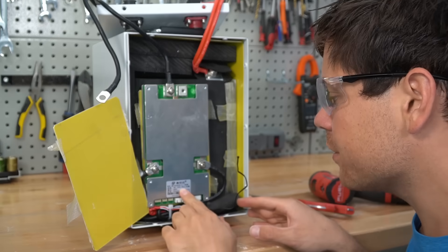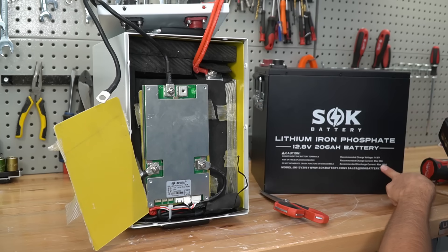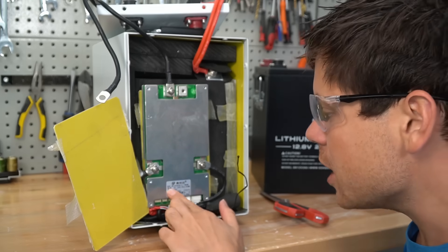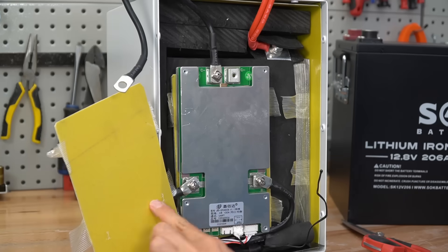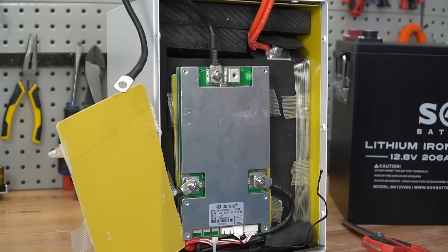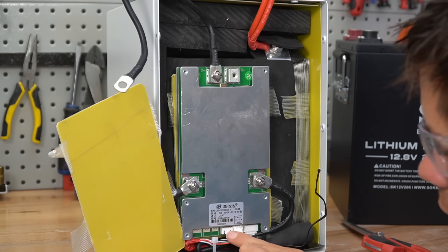This is a 150-amp BMS. And the SOK can only do 100 amps. And this is a JBD, so this is the same one that makes Overkill Solar's BMS. I don't like how it's mounted, but this is a high-quality BMS. And we have a balance cable, a temp sensor, and this is where the Bluetooth would go.